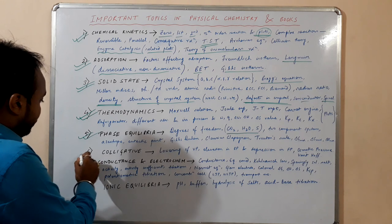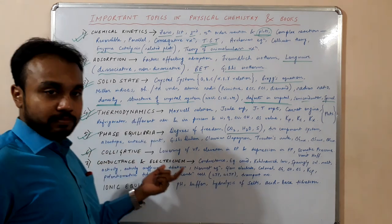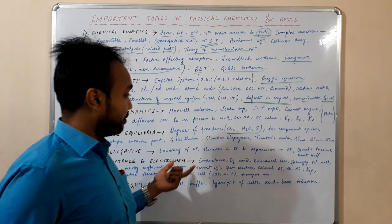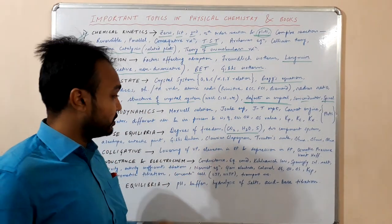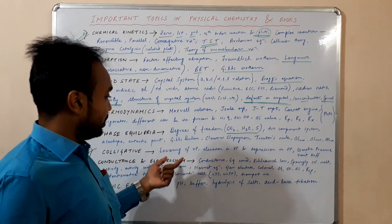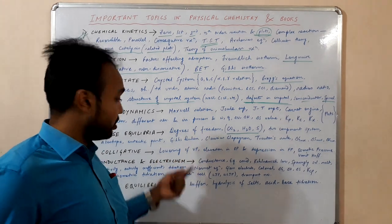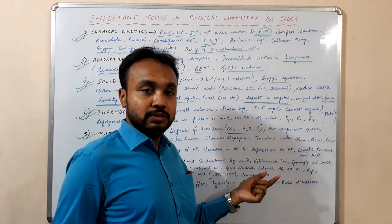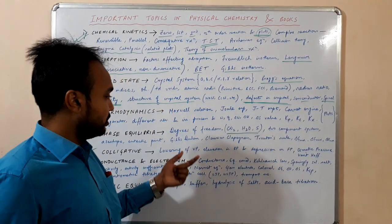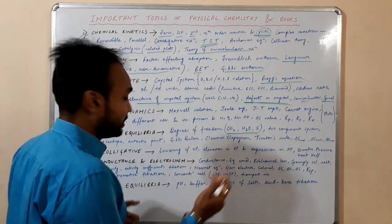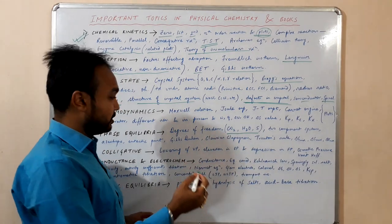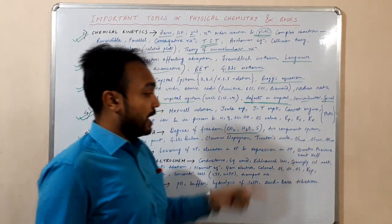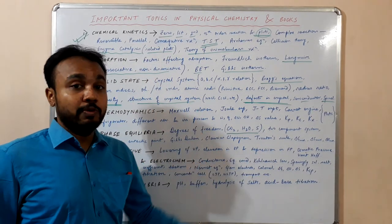Next is the colligative property. This chapter is very easy — in class 12 standard this chapter is covered, so you might have studied it earlier and have a clear idea. Just try to remember the formulas: lowering of vapor pressure, elevation in boiling point, depression in freezing point, osmotic pressure, and the abnormal behavior using the Van't Hoff equation.